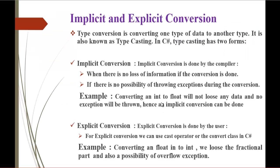Coming back to the slide, you can observe: implicit conversion is done by the compiler, there is no loss of information, and we did not encounter any exceptions. That is the specialty of implicit conversion. As we saw in Visual Studio, we converted the integer to float without losing any data and without any exceptions. This is what implicit conversion is.